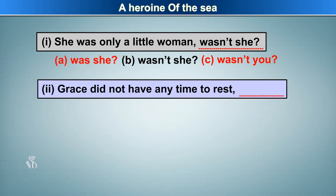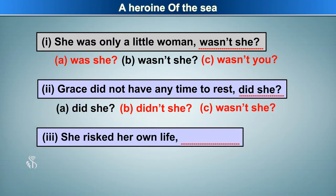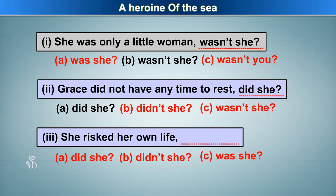'Grace did not have any time to rest.' Options: Did she? Didn't she? Wasn't she? 'She risked her own life.' Options: Did she? Didn't she? Was she? The correct answers are: Didn't she? and Didn't she?